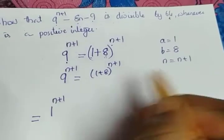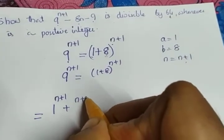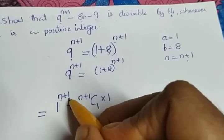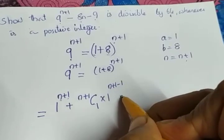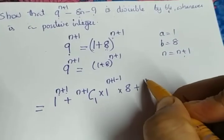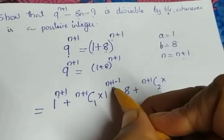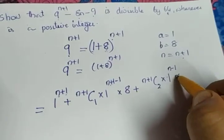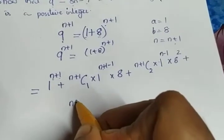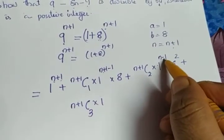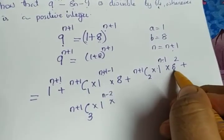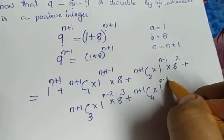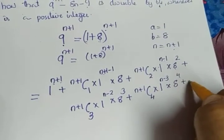Applying the Binomial Theorem: (1+8)^(n+1) = 1^(n+1) + (n+1)C1 · 1^n · 8 + (n+1)C2 · 1^(n-1) · 8² + (n+1)C3 · 1^(n-2) · 8³ + (n+1)C4 · 1^(n-3) · 8⁴ + ... and the last term is 8 raised to n+1.